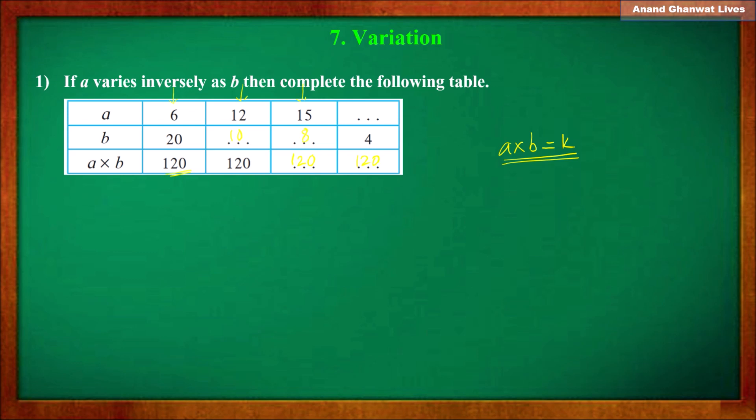In the next column, when a = 15, the value of b is 8. In the last column, when b = 4, the value of a is 30. In this way we can easily calculate the value of one quantity when the other quantity is given.